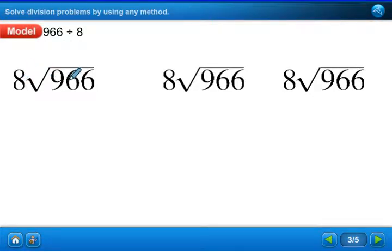8 goes into 9 how many times? Notice I didn't say 96, but that could have been. But we're going to only look at that 9. And we said 1, 1 times 8 is 8. We're going to then, after we've multiplied, subtract. 9 minus 8 is 1. And to bring down, we're going to use this arrow to bring down. We're going to bring down that 6.